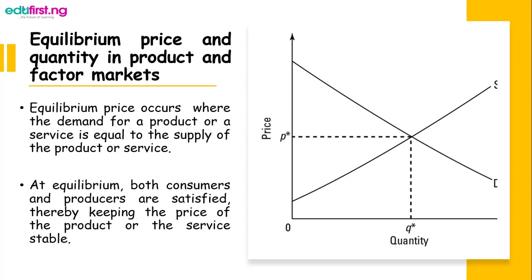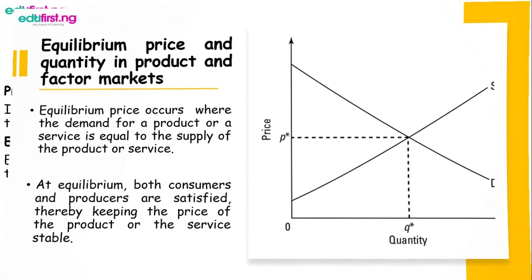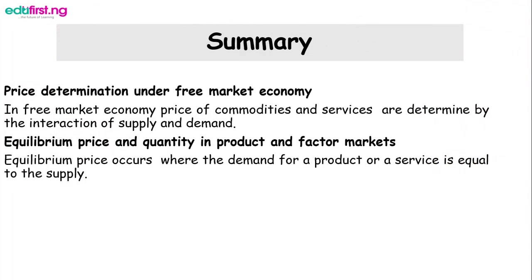What have we studied so far? We have studied price determination under free market economy. We have also studied equilibrium price and quantity in product and factor markets, and we have mentioned that equilibrium price occurs where the demand for a product or services is equal to the supply.